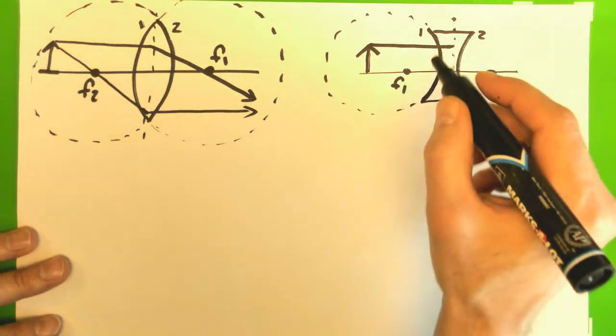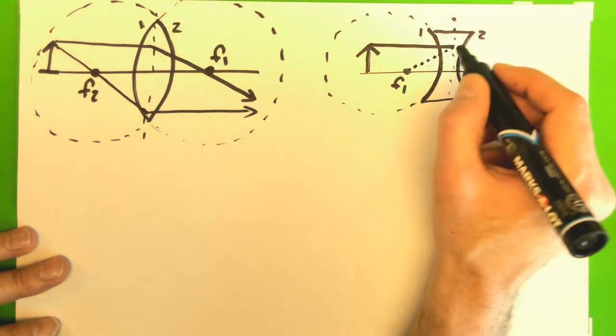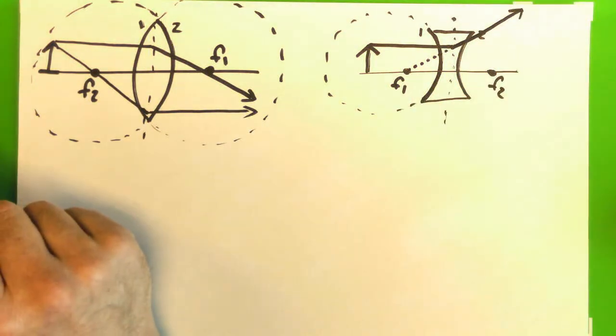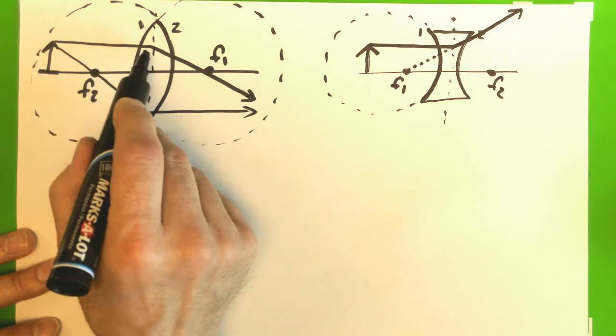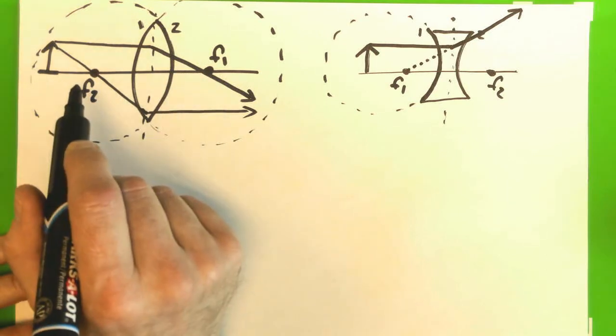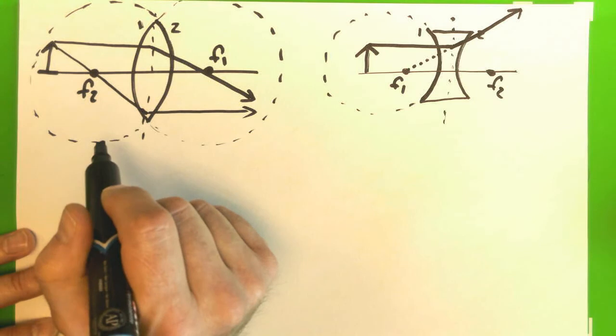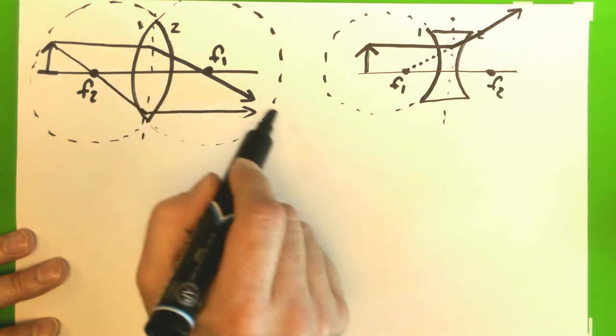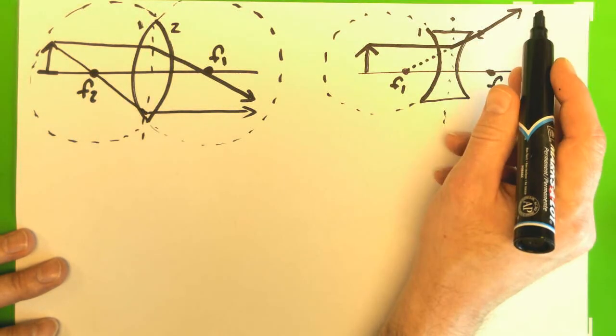The light's got to continue going through this way. And so when we say associate, what we mean is it actually bends through the lens as if it's coming out of that focal point. So by saying a new rule is that the parallel ray goes to the lens and then is associated with the first focal point, or the focal point associated with the first surface of the lens.